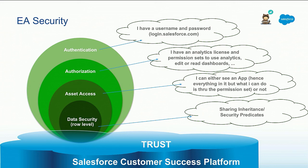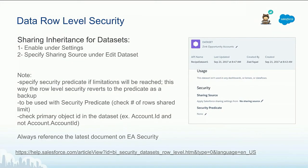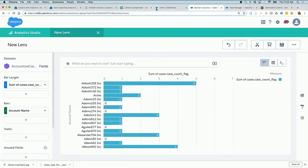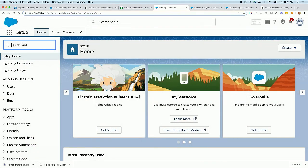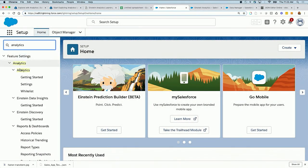Now that we've covered the layers of security, the two common ways to address row-level security are sharing inheritance or security predicates. Sharing inheritance can be enabled at two levels: first, you need to enable it under Settings. If we go back to our environment, all the way to Setup > Analytics > Settings.